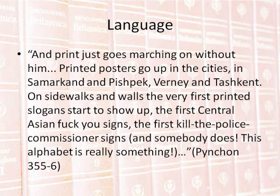Language is the primary medium through which the presented information is selected and organized, and the formation of language also illustrates this selection and organization. The character of Chichirin encounters a community attempting to oppress native peoples by imposing a new Turkic alphabet as their means of communication. However, as Chichirin starts a political dispute that leads into a rebellion, print just goes marching on without him — printed posters go up in the cities, in Samarkand and Pishpek, Verny and Tashkent. On sidewalks and walls, the very first printed slogans start to show up: the first Central Asian 'fuck you' signs, the first 'kill the police commissioner' signs — and somebody does. This alphabet is really something. The alphabet and language used to oppress the natives becomes their tool for asserting power over their opponents, through the selection of its use and their reorganization of language to make these signs and slogans.